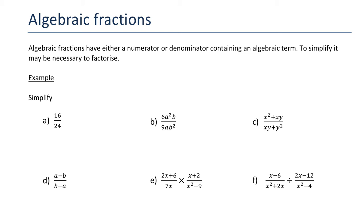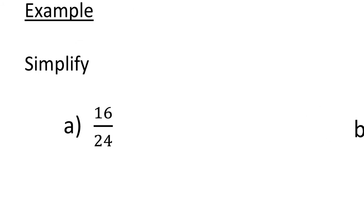We're going to look at the first one as a numerical example. We've got 16 over 24. Now what you would normally do is you would probably just think well 8 divides into 16 twice and 8 also divides into 24 three times so it's just 2 over 3.